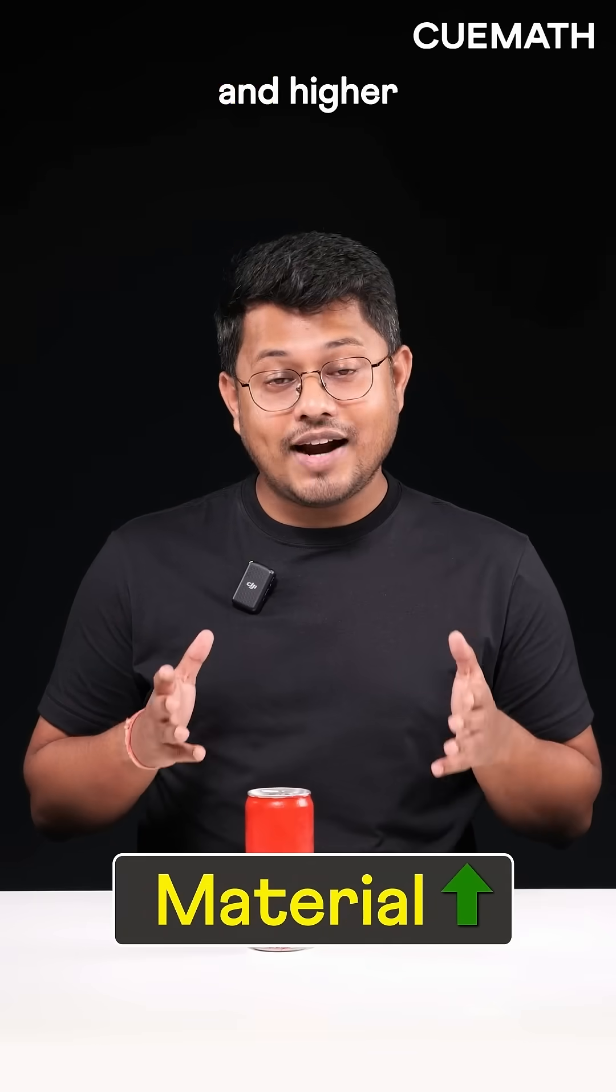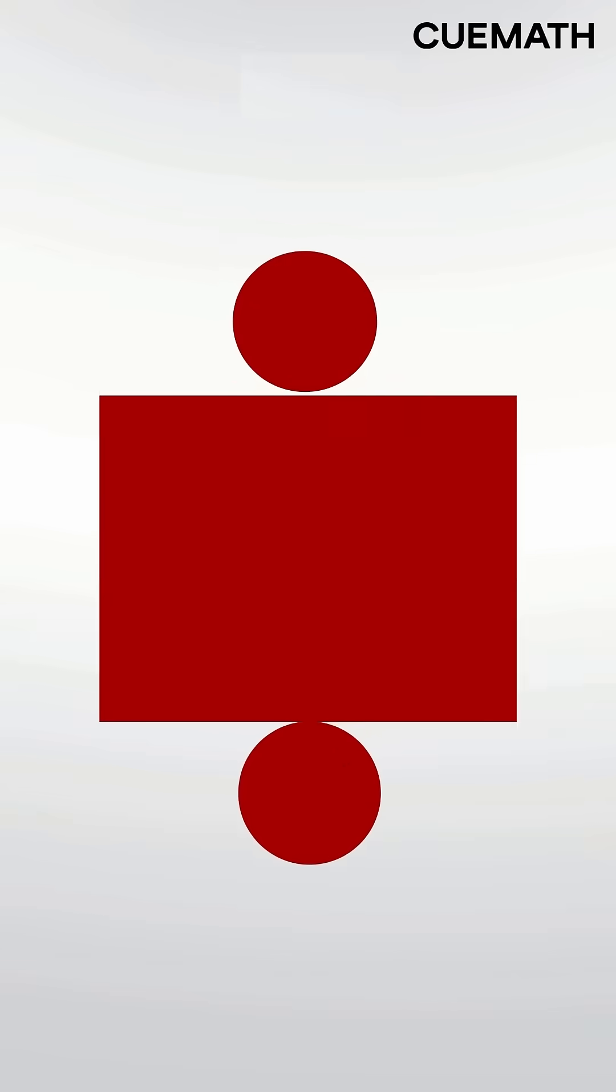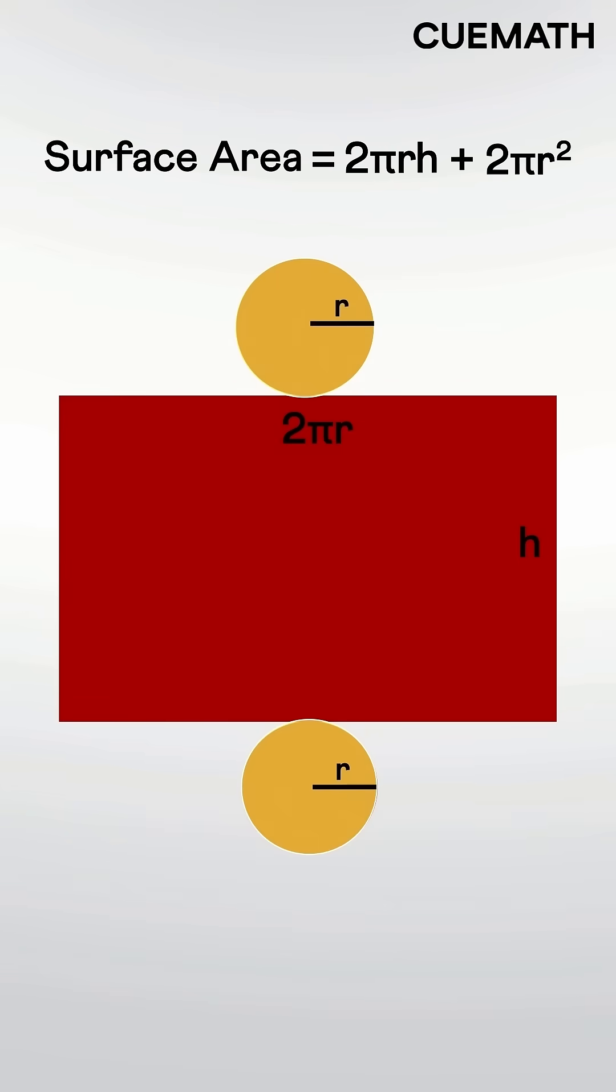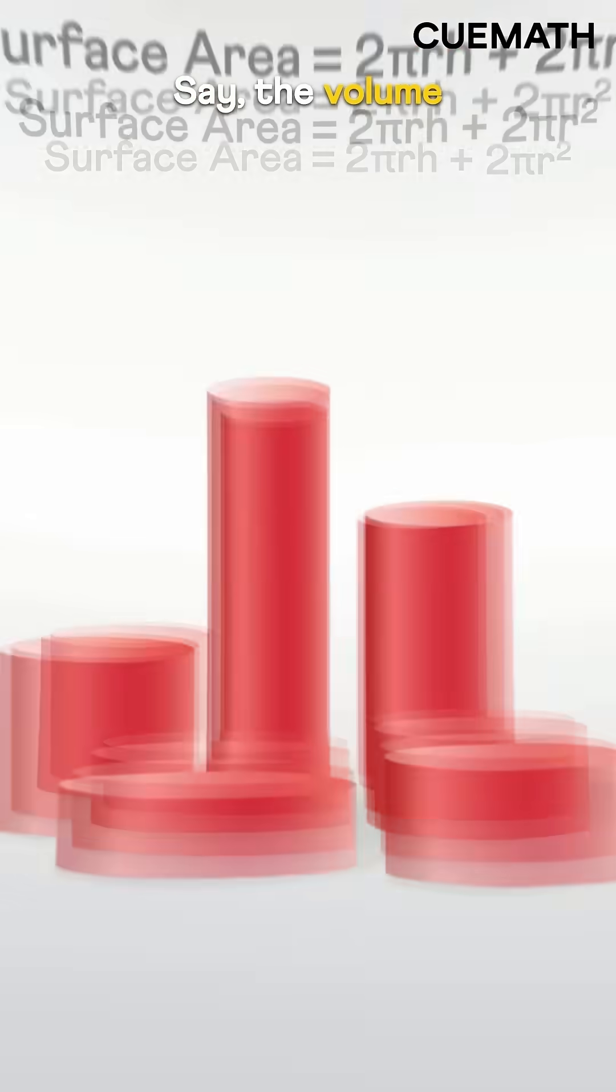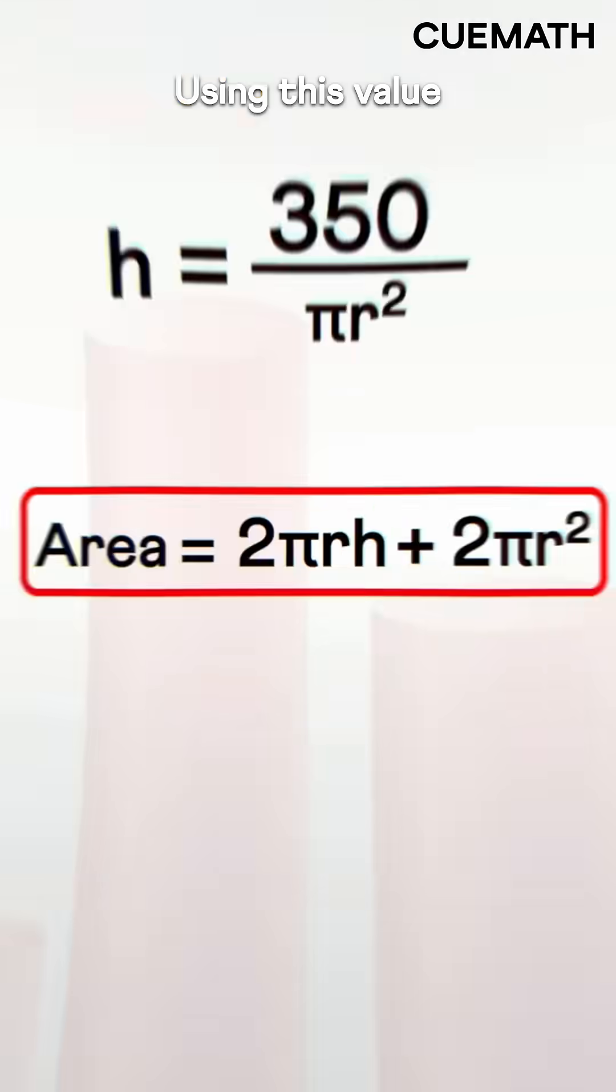More surface area means more material and higher cost, so the ideal can should have the least surface area. The surface area of a cylinder is 2πrh + 2πr². Say the volume of these cans is 350ml each. Since volume is πr²h, h = 350/πr².